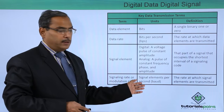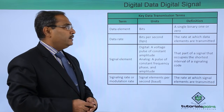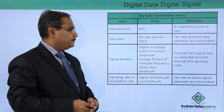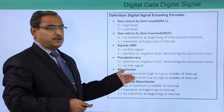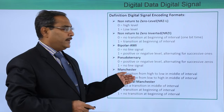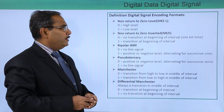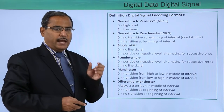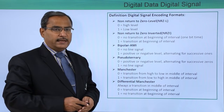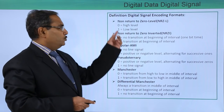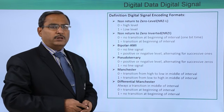In this table we have discussed multiple key data transmission terms. Now we move to different types of digital signal encoding techniques and formats. The first one is Non-Return to Zero Level, abbreviated as NRZ-L. In NRZ-L, zero means high level and one means low level.